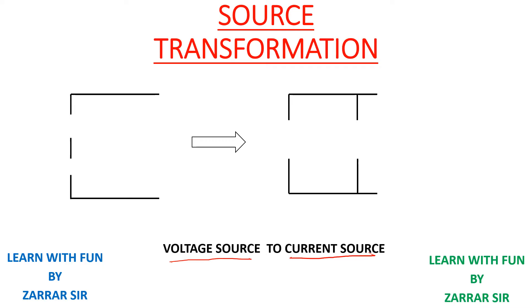We will first convert a voltage source to a current source, and then later vice versa. I have a voltage source with some resistance, which I'll name R. As you can see, a voltage source is always in series with resistance.